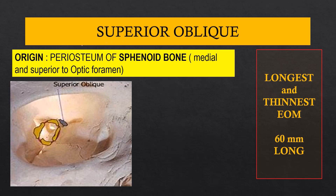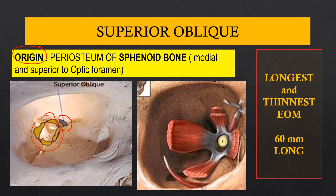Coming to the superior oblique, where does it arise from? Unlike the various recti which take their origin from the annulus of Zinn, the superior oblique takes its origin from a part of the sphenoid bone situated medially to the annulus of Zinn and slightly superior — this part is the lesser wing of the sphenoid. From the annulus of Zinn, all the recti muscles originate; however, the superior oblique takes its origin from the lesser wing of the sphenoid.